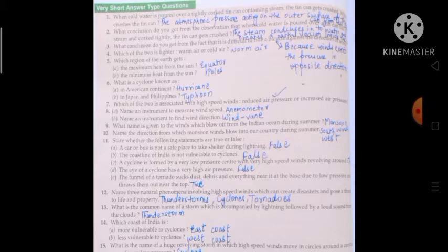Eighth one: A) name an instrument to measure wind speed. The answer is anemometer. B) name an instrument to find wind direction. Answer is wind vane.